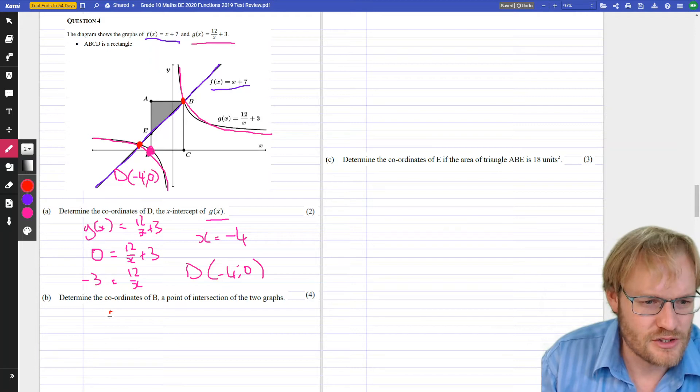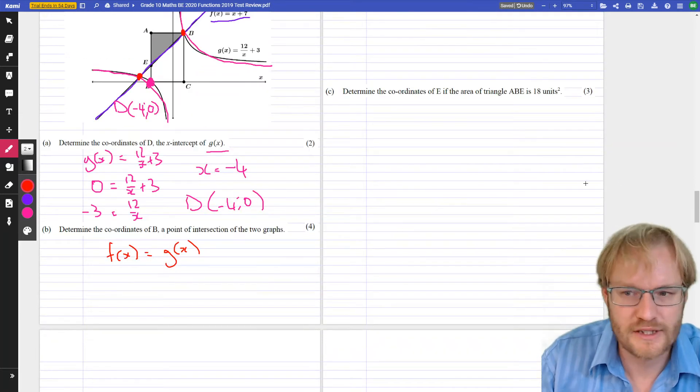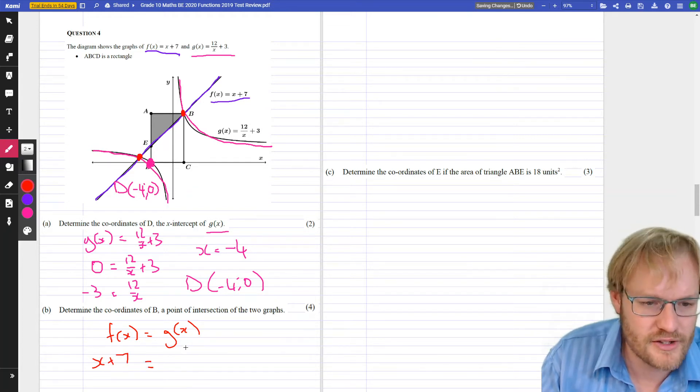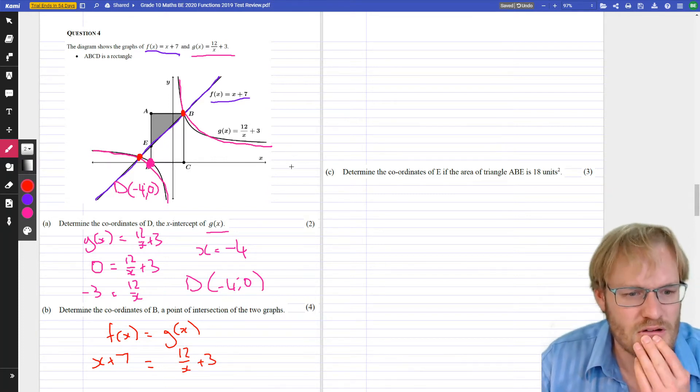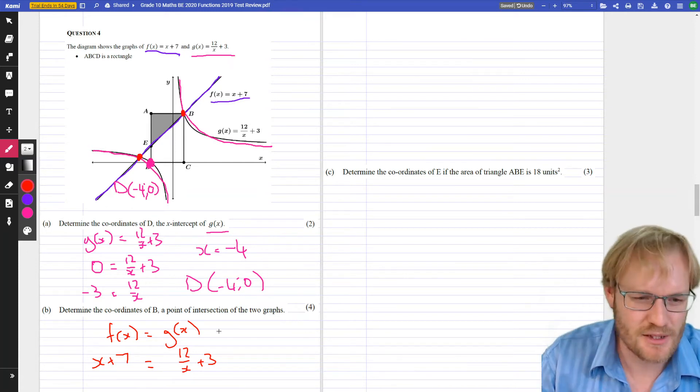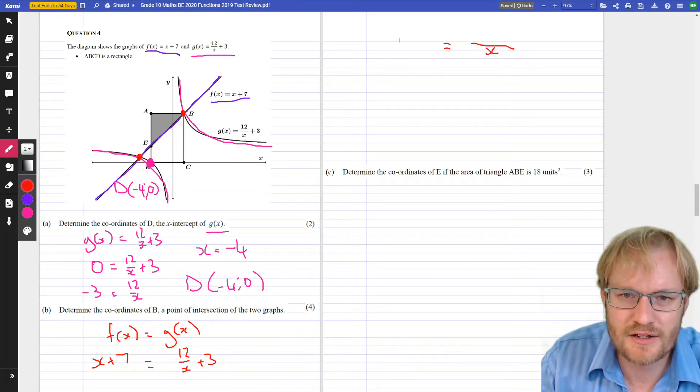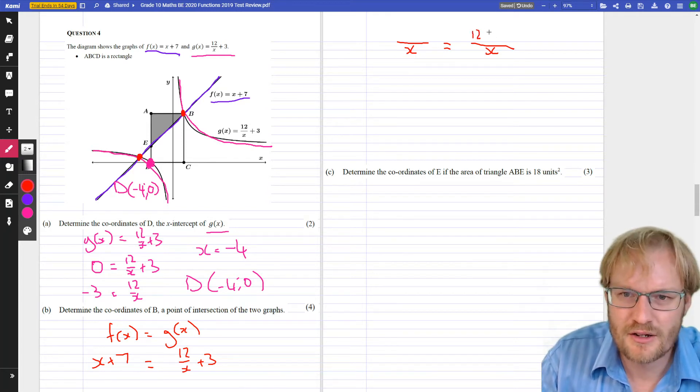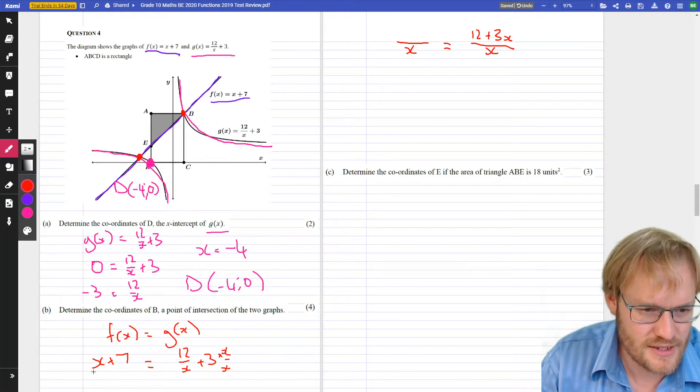When are those two graphs equal to each other? When is F of X equal to G of X? When is X plus 7 equal to G of X, which is 12 over X plus 3. So, how are we going to solve that? We've got this equation with a fraction. Normally, we try and get common denominators or multiply out. Let's put the whole thing over X and do the same to that side. In other words, we're going to multiply everything by X.